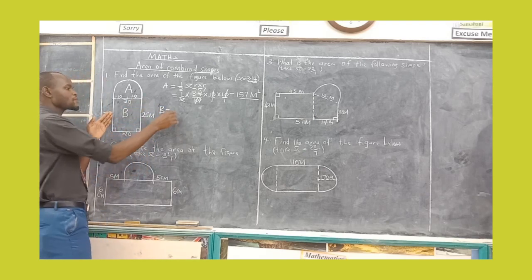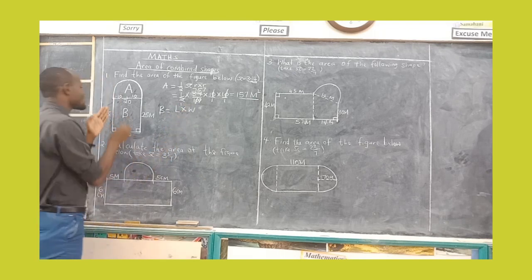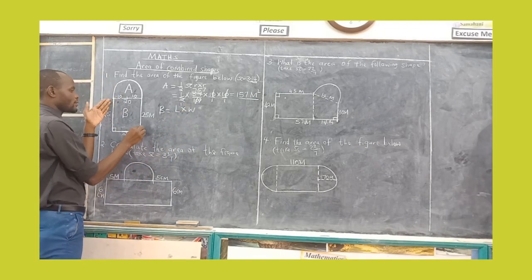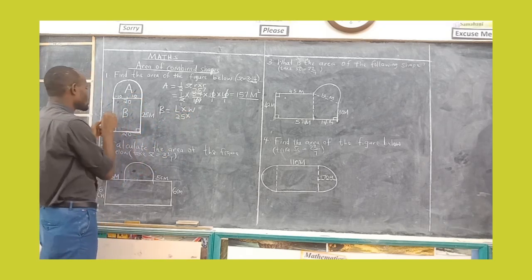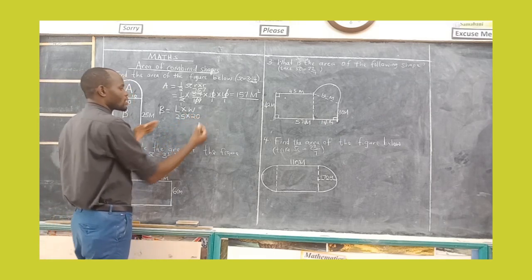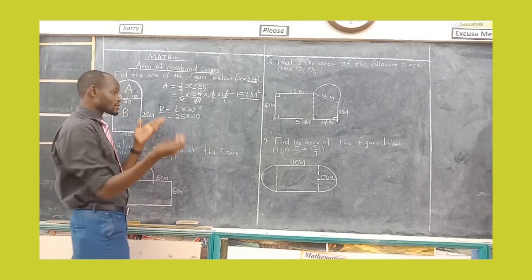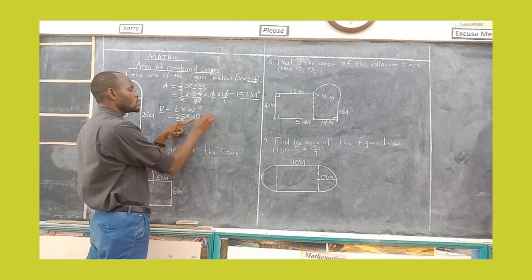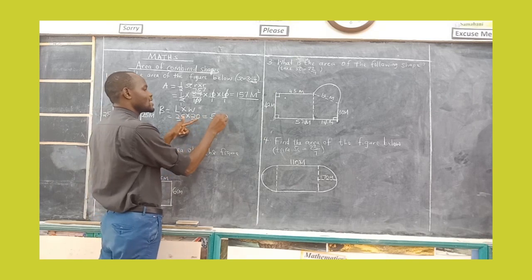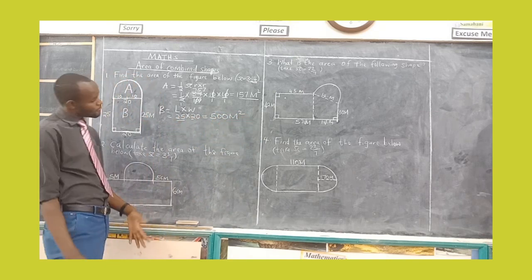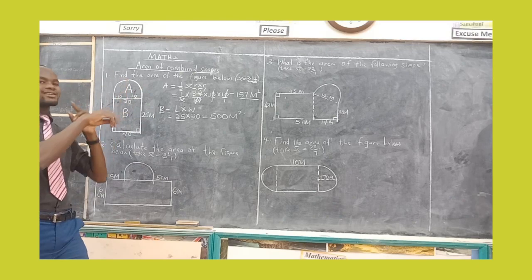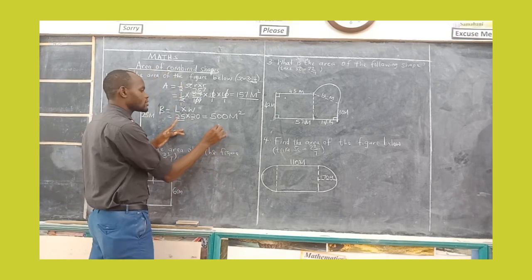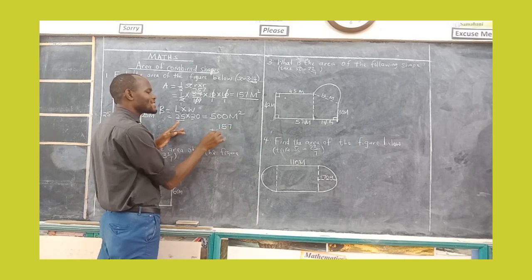How do we get the area of a rectangle? The formula is length times width. This is the rectangle we are talking about. The length is supposed to be longer in most cases. So you have 25 times 20. We have 25 times 2, you get 50, then we have this 0, so the area of the rectangle is 500 meters squared. This was the area of the semi-circle. We want to get the area of the combined shape, which is 157 plus 500.